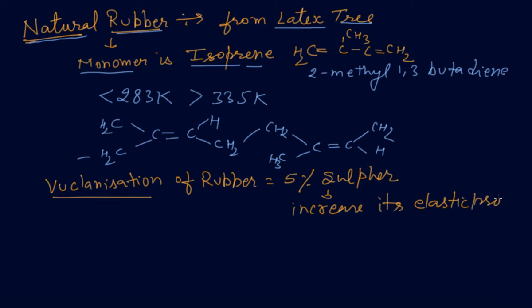Heating natural rubber with sulfur at temperature range 373 to 415 Kelvin, we will get vulcanized rubber. Vulcanized rubber has that ratio of 5% sulfur.